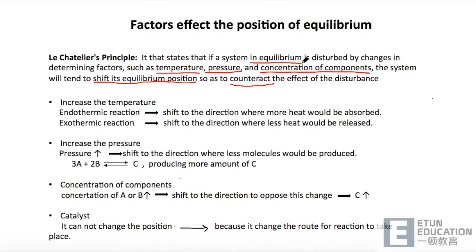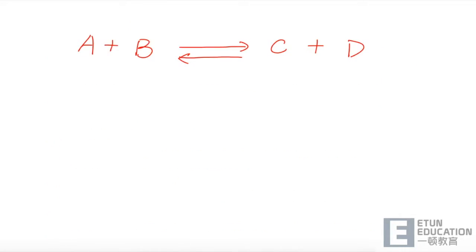那这些主要因素有三个。第一个是 increase the pressure,或者是 temperature change,或者是 concentration of components。首先我们来讲一下第一个是 increase the temperature. 举个例子,一个化学反应方程式,比如说 A + B 生成了 C + D. 如果它是个放热反应,那就是 exothermic reaction.